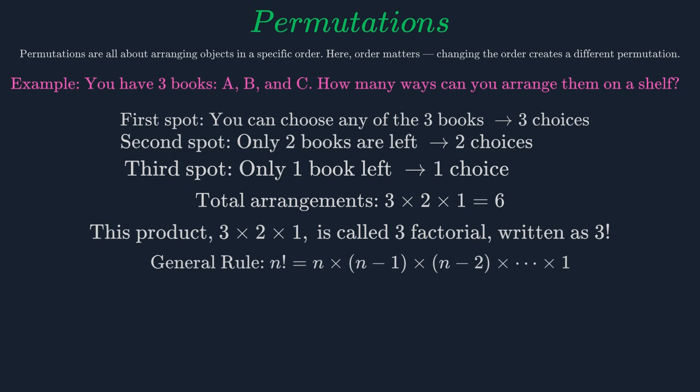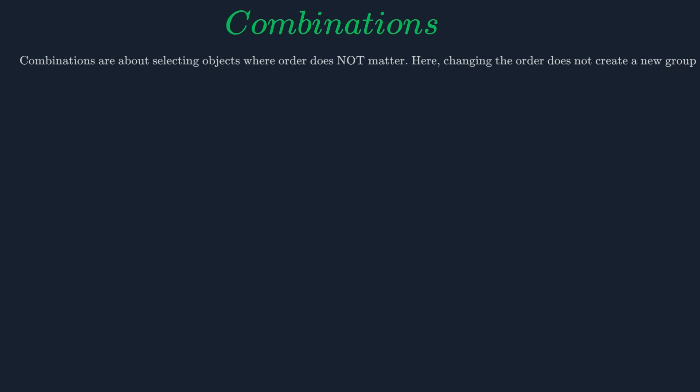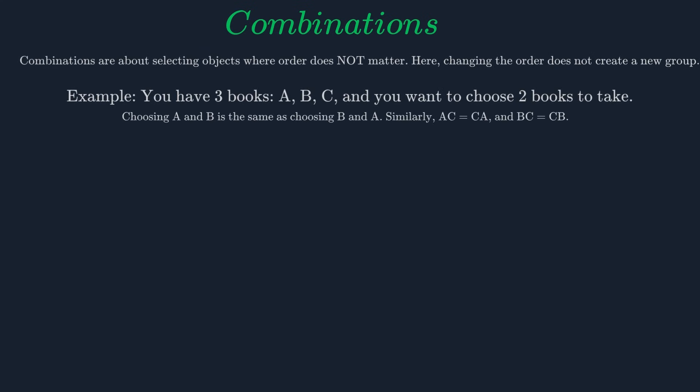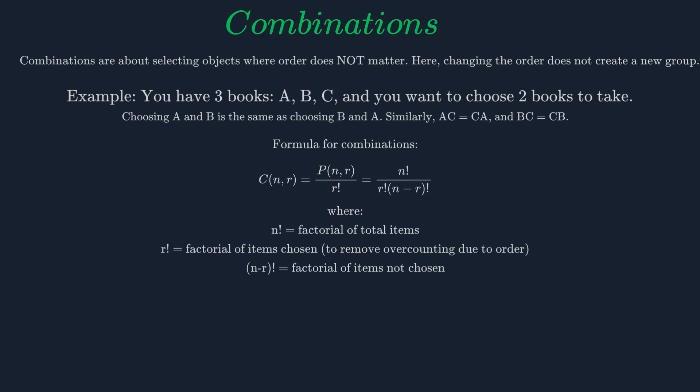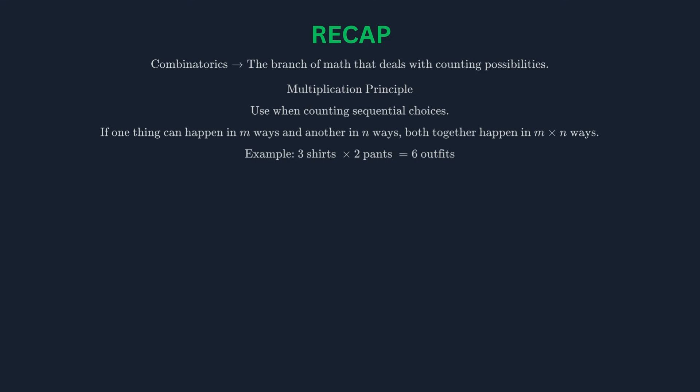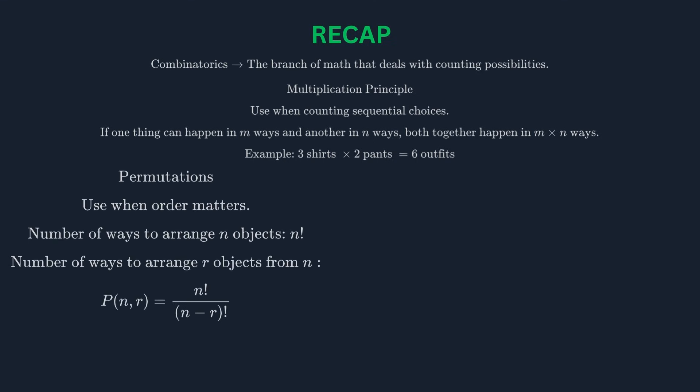In general, the number of permutations of n objects is n factorial. The formula for permutations of n objects taken r at a time is n! / (n - r)!. This is used when you're arranging a subset of your objects. What if the order doesn't matter? That's where combinations come in. A combination is a selection of objects where the order does not matter. Let's say you have three books A, B, and C, and you want to choose two of them to take with you. The combination {A, B} is the same as {B, A}—the order doesn't change the group. The formula for combinations is the permutation formula divided by r!, which accounts for the overcounting caused by different orderings. So to recap: combinatorics is about counting. The multiplication principle helps us count sequential choices. Permutations are for arrangements where order matters, and combinations are for selections where order does not matter.